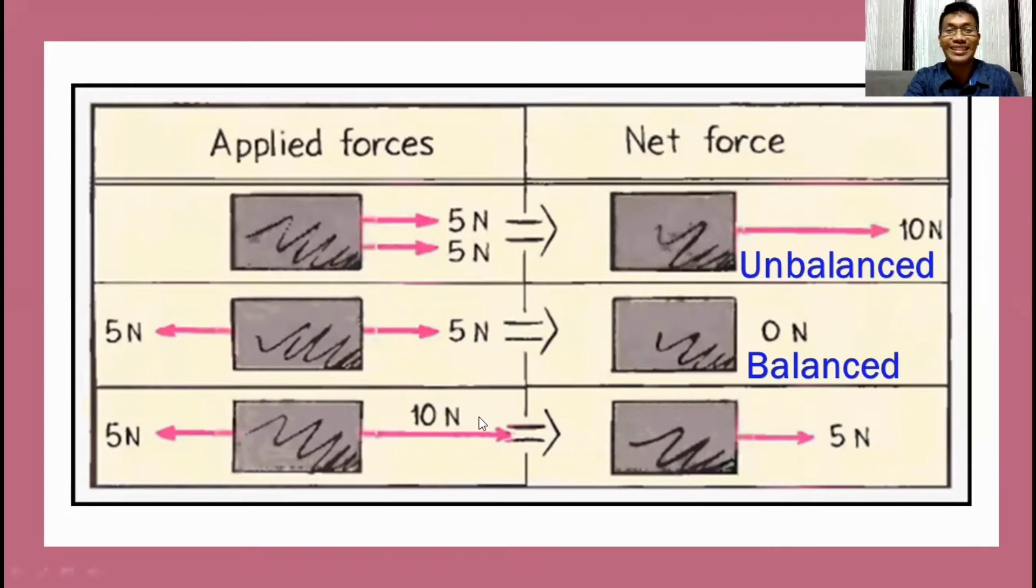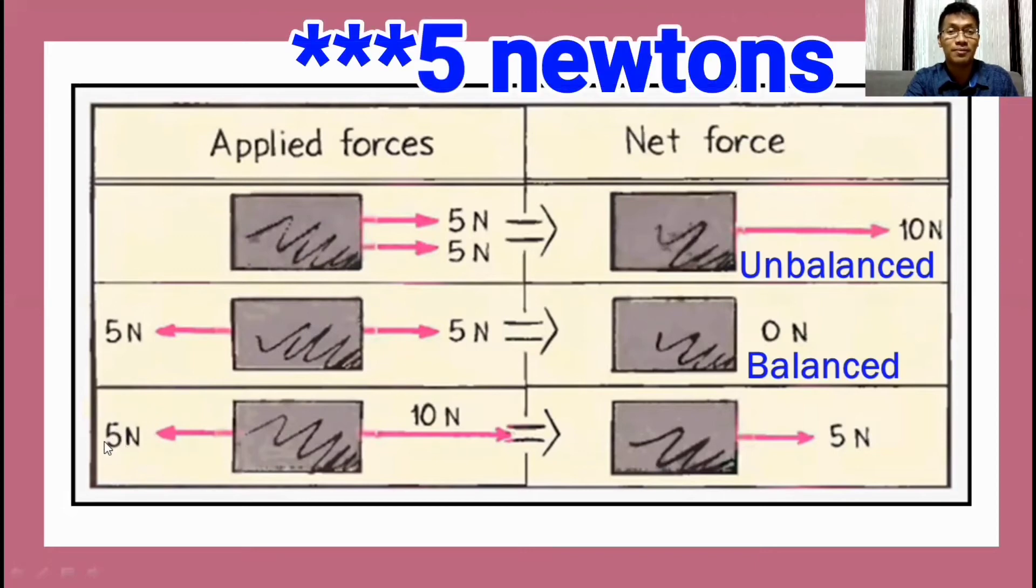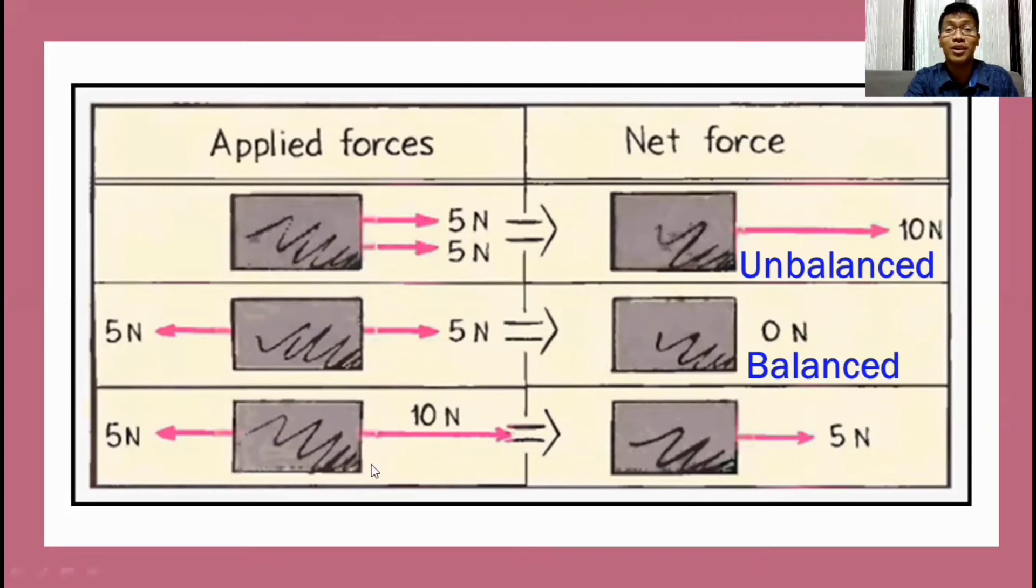How about the third example? We got here two forces in opposite direction as shown by the arrows. However, on the left side, the person is exerting five newton. While the person on the right side is exerting ten newton, which is greater than what is exerted by the person on the left. So therefore, our net force would be five. How do we get that?